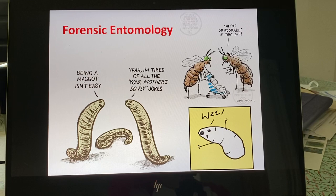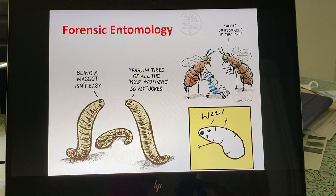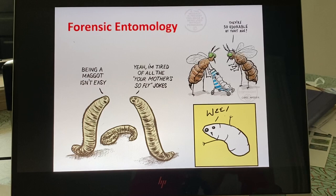We're going to start entomology today. Entomology is basically bugs on deceased people, and the principal purpose of entomology is to try to establish when a person died — or if not their time of death, when their remains became accessible to insects. This is one of the specialties that works hand in hand with the anthropologist.